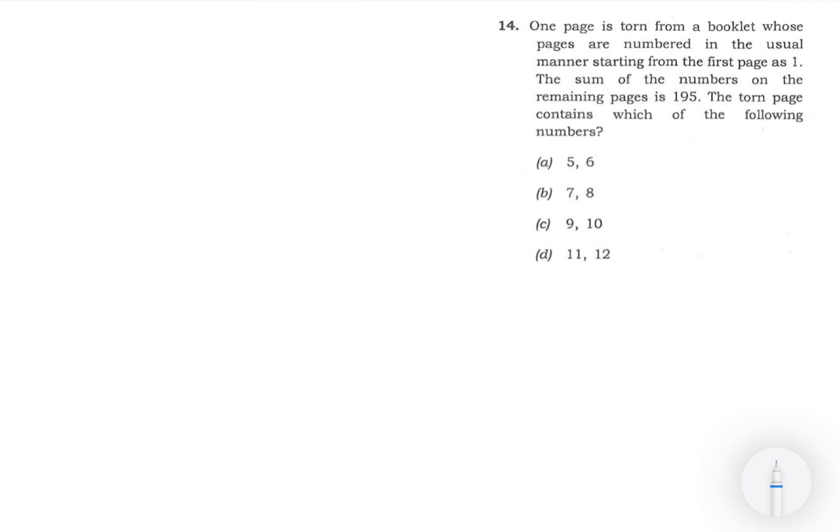One page is torn from a booklet whose pages are numbered in the usual manner, starting from the first page as 1. The sum of the numbers on the remaining pages is 195. The torn page contains which of the following numbers?